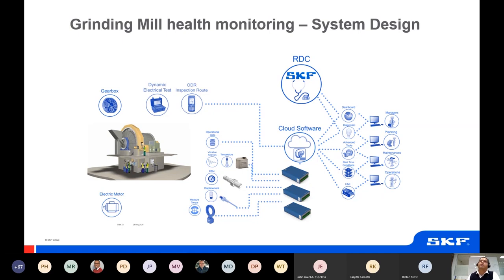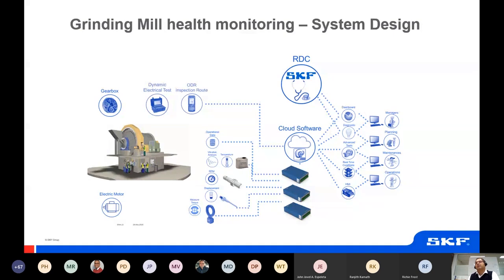For the trunnion bearing — a very slow speed application — we can still pick up bearing failure using vibration sensors. Even though the low-frequency cutoff of the vibration sensor may be lower than the running speed, running speed has nothing to do with the modulated energy from the bearing, and that's what we're interested in to detect bearing failure. Let's look at some spectra and time waveforms.